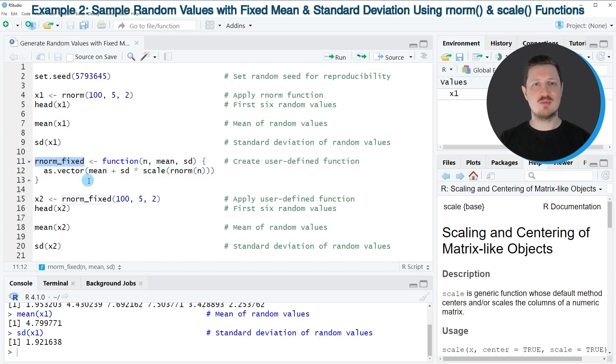So in this case I'm calling my function rnormfixed, and then I'm creating a user-defined function which takes the number of values that we want to generate, the mean that we want to keep, and the standard deviation that we want to specify as input values. And then within the function I'm using the svector function in combination with the scale and rnorm functions to scale our data to a fixed mean and standard deviation.